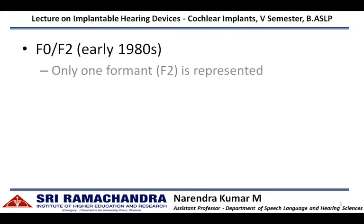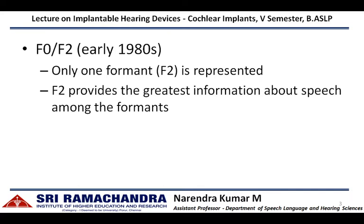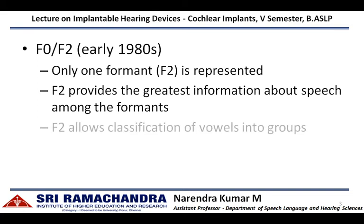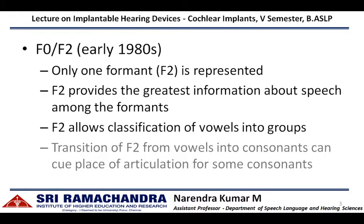The F0-F2 strategy was developed in the early 1980s and represents only one formant. Though it extracts both the fundamental frequency and second formant frequency, only the second formant frequency is represented at the cochlea. The second formant frequency provides the greatest information among other formants for a speech sound. It allows the classification of vowels into various categories, and its transition from vowels into upcoming consonants can provide information regarding the place of articulation for some consonants.